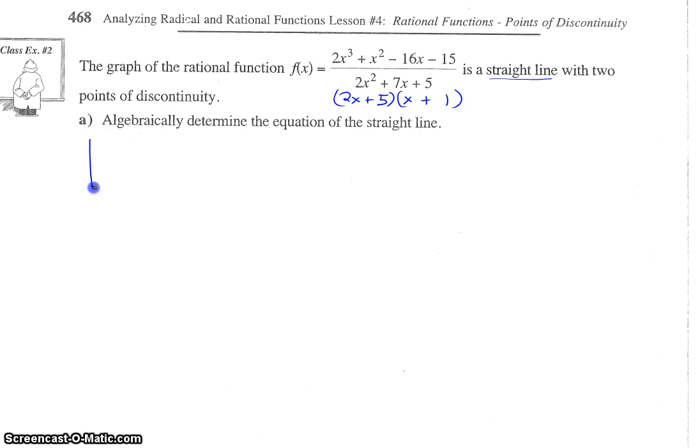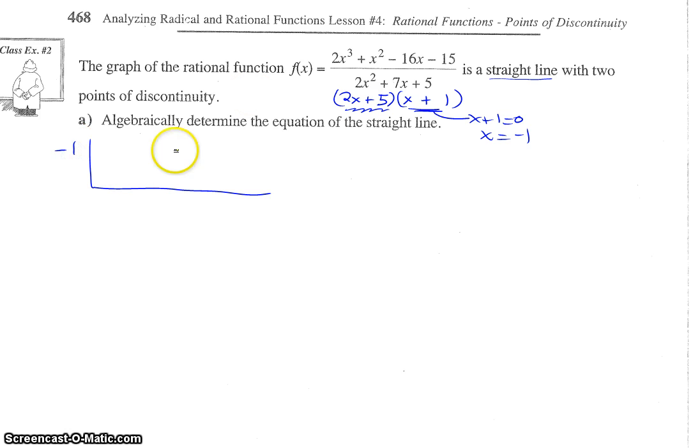Okay, so we are now going to do synthetic division to divide one of those factors in. Now, we don't want to use, this would turn into x being negative 5 halves. We don't want to use a fraction with synthetic division, so we're going to use our linear factor. So, that one, x plus 1 equals 0, so x equals negative 1. So, we'll put negative 1 here.